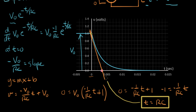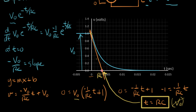T equals RC is that time right there — that's how many seconds after the step that this tangent line hits the time axis. Notice that there's no mention of V-naught in this result — it divided out in the algebra. So independent of how high this thing starts, whether it's high or low, the slope of this tangent line always goes right through the time axis at time equals RC.